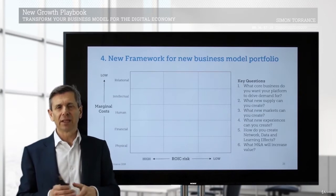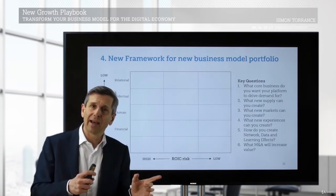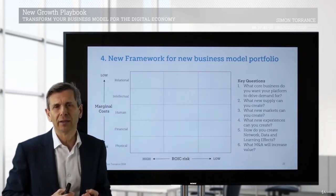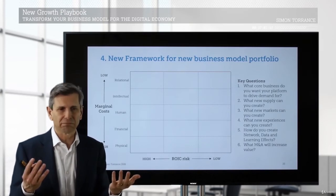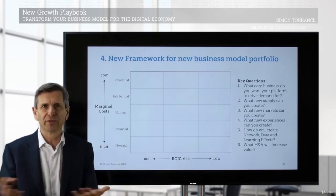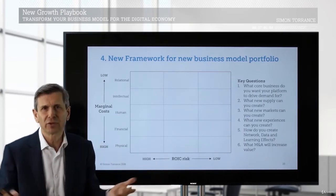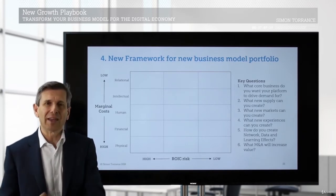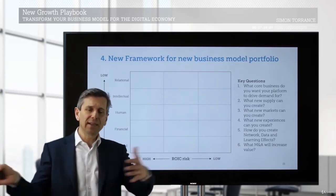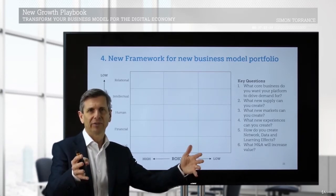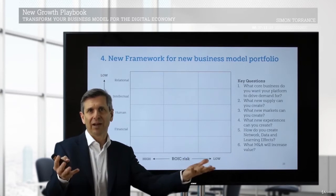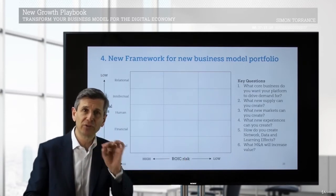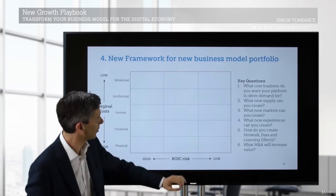The second question is: what new supply could we create in a marketplace? Think back to Airbnb — they created entirely new supply. For people traveling, there was no option for staying at other people's houses. Airbnb created completely new supply into the marketplace, which is people's houses rented out. So what is the opportunity to create new supply in the market that doesn't currently exist?